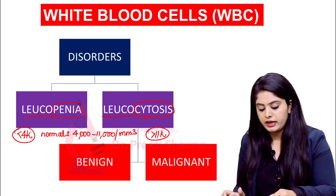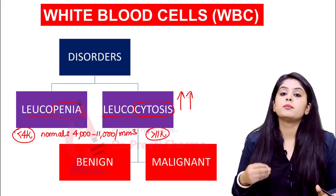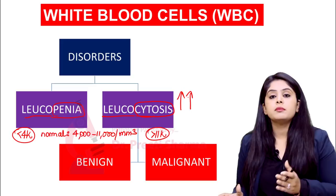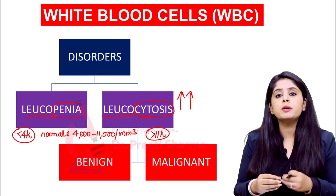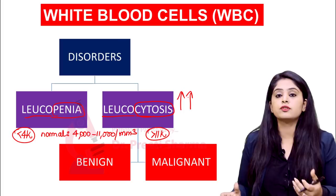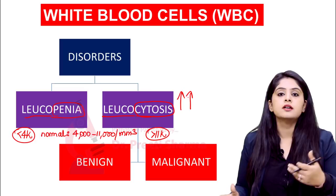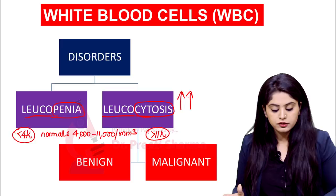When the WBC count increases, either it can be because of benign or non-tumorous conditions — like if someone is suffering from a viral or bacterial infection — or it can be because of cancerous conditions, what you know as leukemias and lymphomas. We will come to leukemias and lymphomas in a while, but first let us deal with what we encounter daily in day-to-day life — how to read a report and derive from it what type of infection the patient is suffering from.